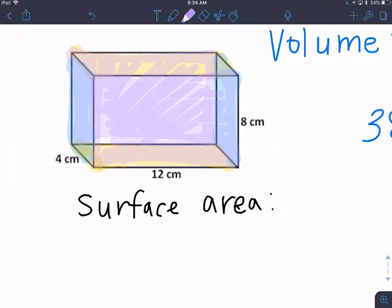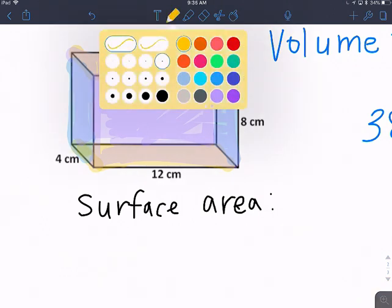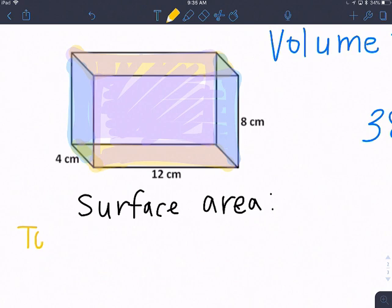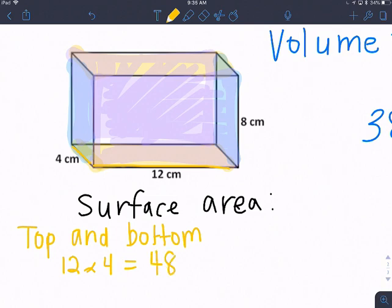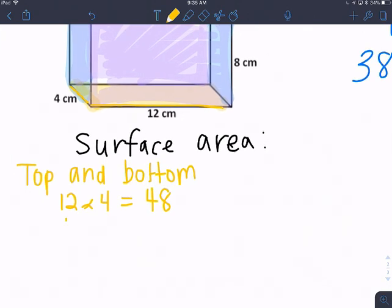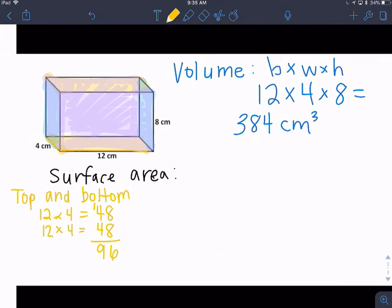So let's start with the area of the top and bottom. So we have a 12 by 4 rectangle. So this is 12 by 4, which is 48. But then we have two of those, so another 12 by 4, we get another 48. And together, we have 96 for the top and bottom combined.